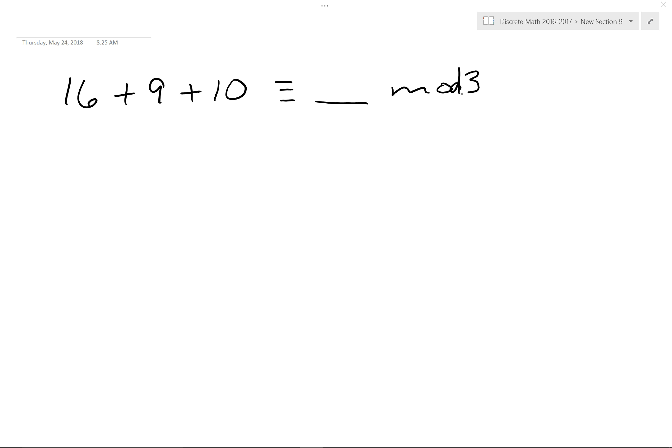I want you to convert each one of them individually. So, I would like you to do this individually. What is 16 in mod 3? I'd like you to do what is 9 in mod 3. And I'd like you to do what is 10 in mod 3. I'd like you to do them individually before you add them together. There's only a few of them on an assignment like this. I want you to do them individually.